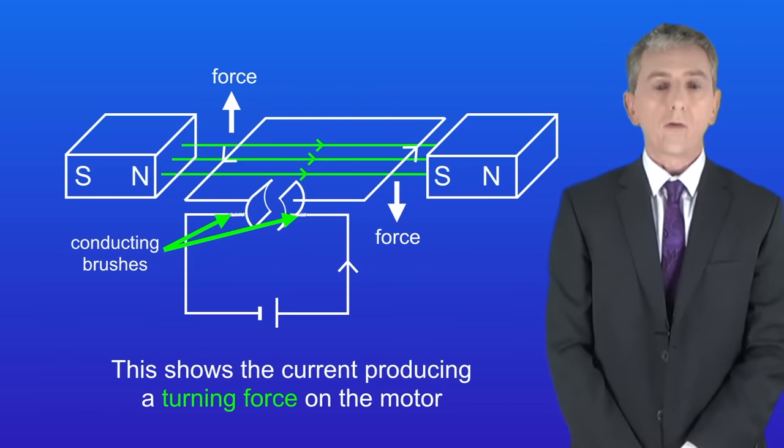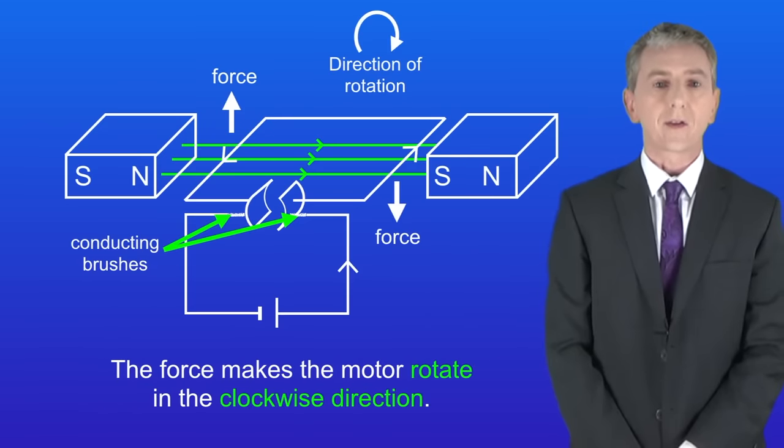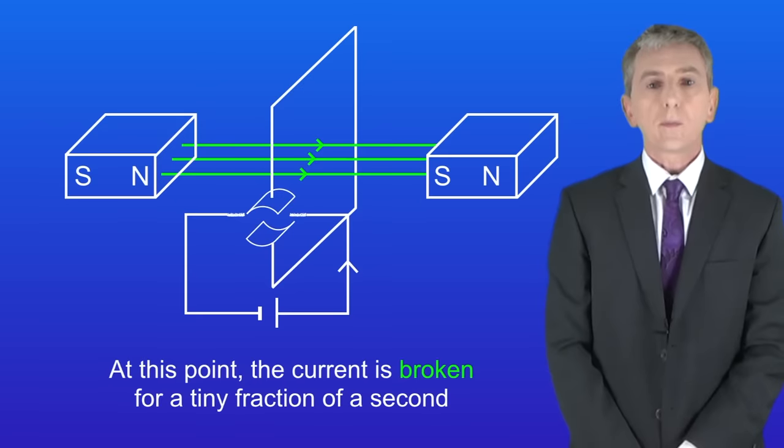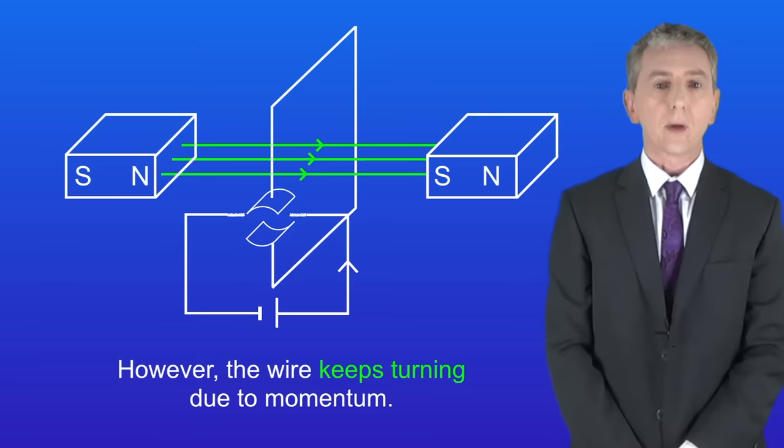So this shows the current producing a turning force on the motor. The force makes the motor rotate in the clockwise direction. At this point the current is broken for a tiny fraction of a second. However the wire keeps turning due to momentum.